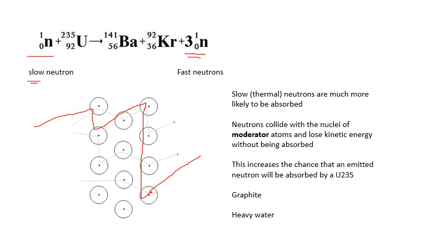Graphite is a very good moderator, and so is heavy water — deuterium oxide (D₂O). Deuterium is the hydrogen isotope with one proton and one neutron (²H), so heavy water is D₂O, compared to ordinary water H₂O.